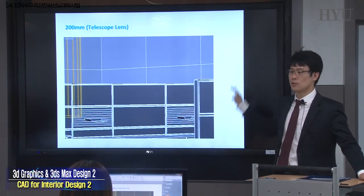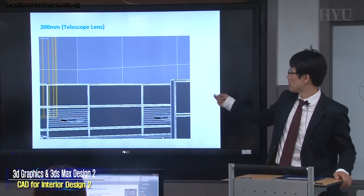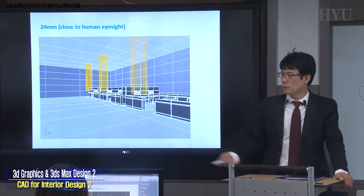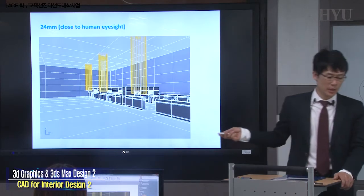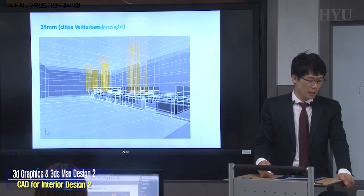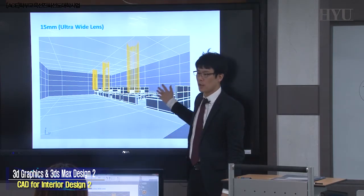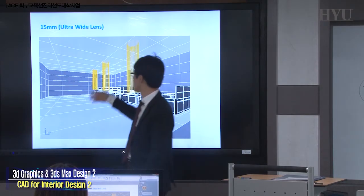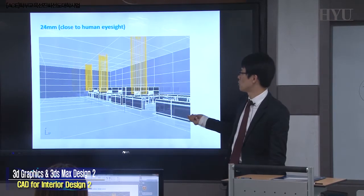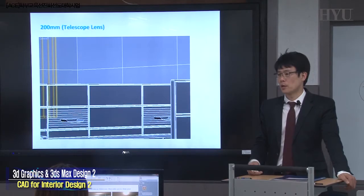Now you can see the difference. This is the 3D Max screen. 3D Max controls only the camera lens focal distance: from 200 millimeter, 85, 50, 35, 24 — and 24 millimeter is kind of close to human eyesight. 15 millimeter is ultra-wide lens. So take a look at the lines — looking very architectural and professional, because vertical lines are all orthogonal. This is how you can control camera focal distance.